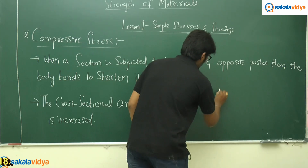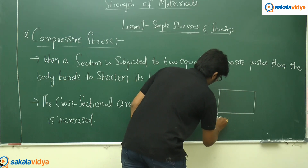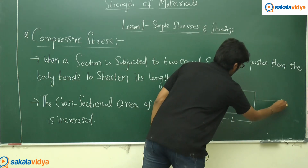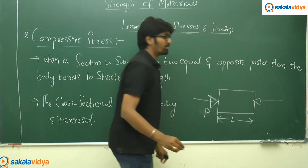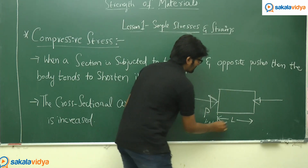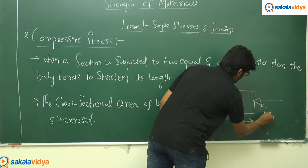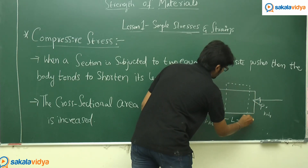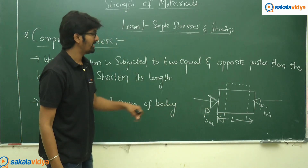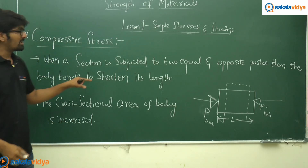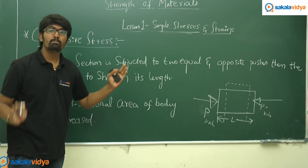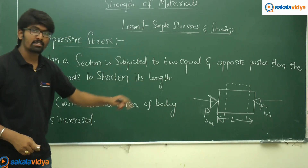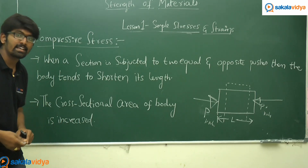Let us take an example: having a body of length L. I am going to apply a uniform compressive load — two equal and opposite pushes of P kN. The body tends to change its shape. There is a decrease in its length and an increase in its cross-sectional area. Simply, when a section is subjected to two equal and opposite pushes, the body tends to shorten its length and the cross-sectional area of the body is increased.